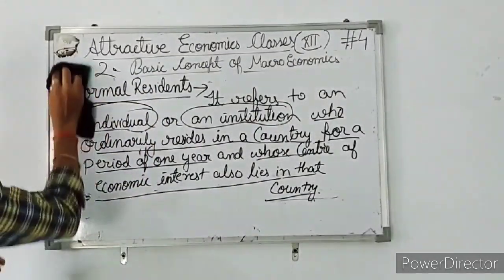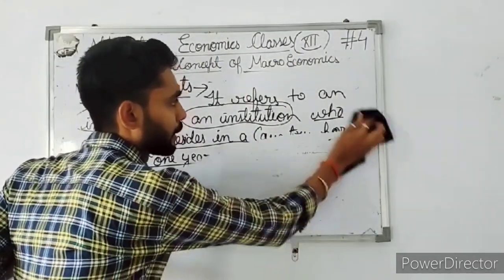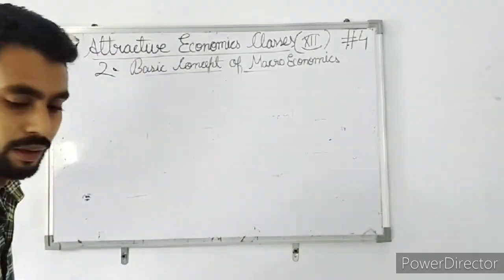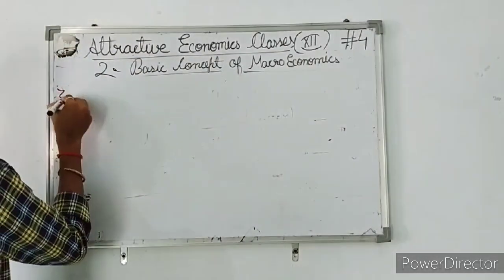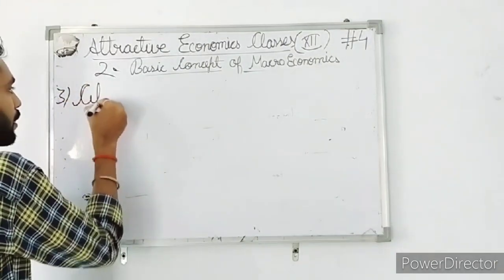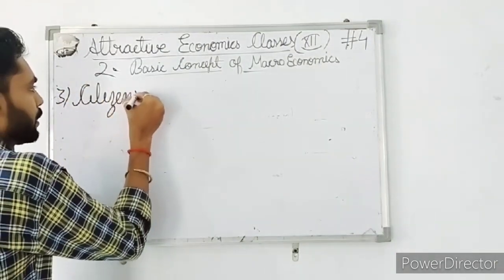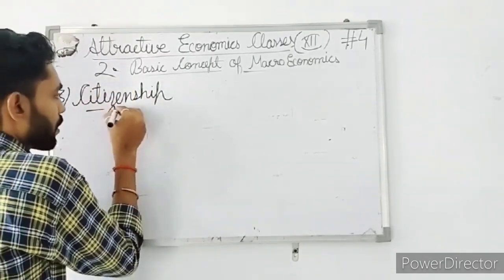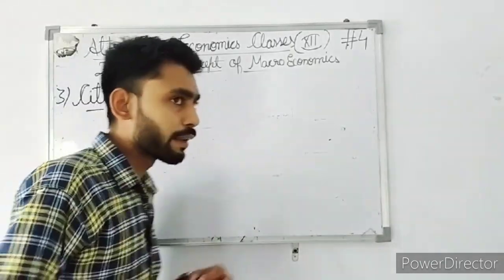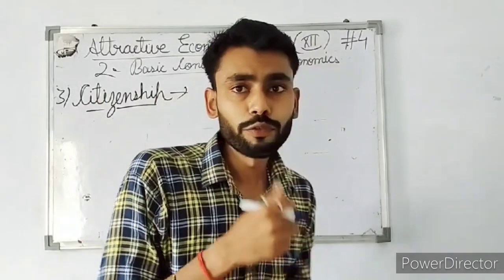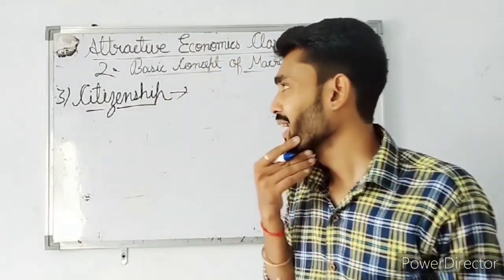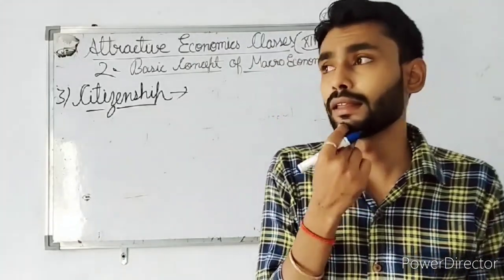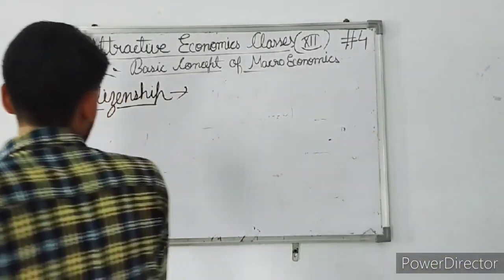We have two topics complete. The first is domestic territory and the second is normal resident. Now let's move to our next topic, that is citizenship.